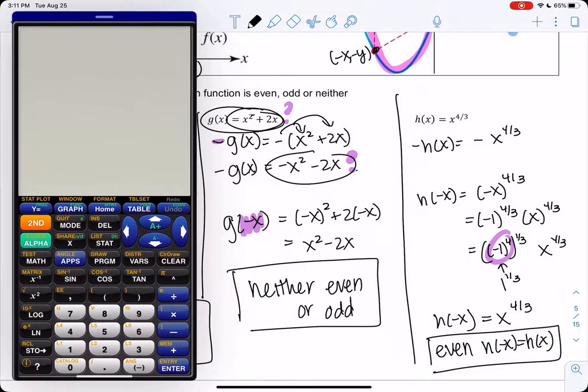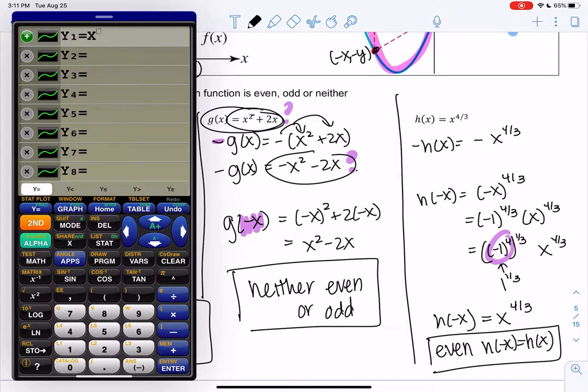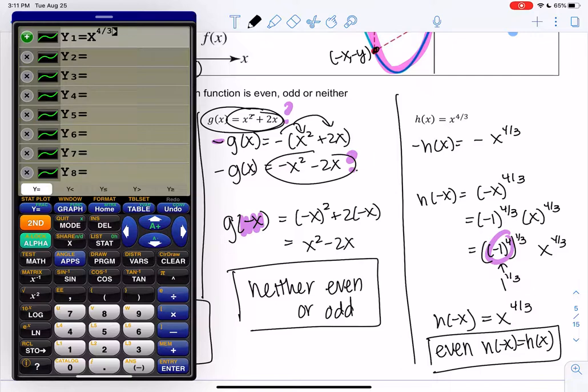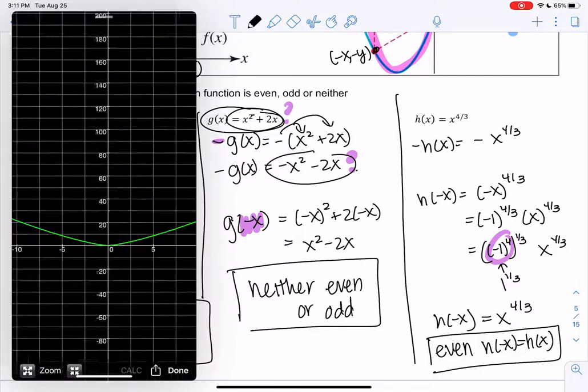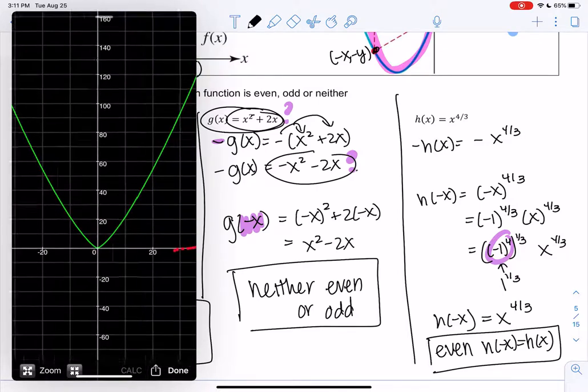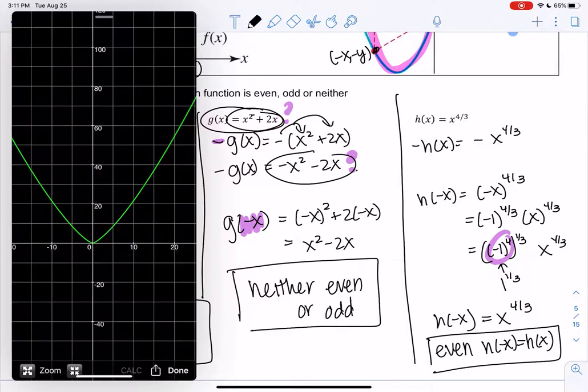And then let's look at h. So this is just for those of you who are visual. Sometimes it's nice to see visually what even and odd means. And then here is h. So it kind of looks like that x to the 2/3 that I showed you. We see that symmetry about the y-axis. The left and the right side are the same.